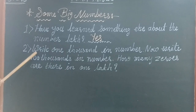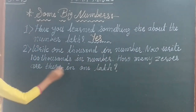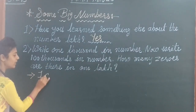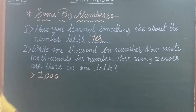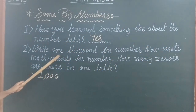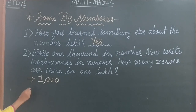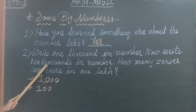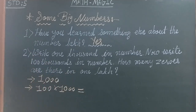Question number 2: write one thousand in numbers. It is very easy. Write one thousand — how to write one thousand in numbers. Now what is the next? Write hundred thousand. So we will write first hundred and thousand. Hundred thousand — so how to write it?